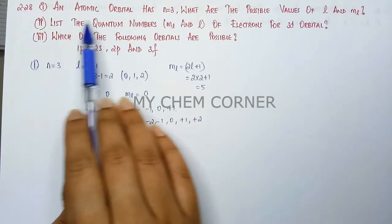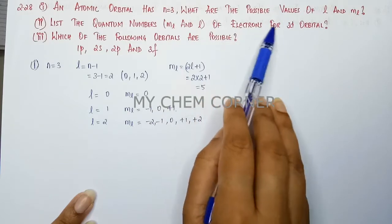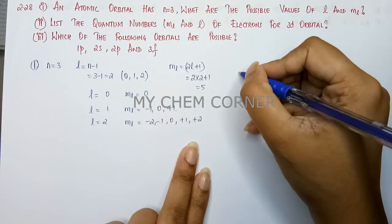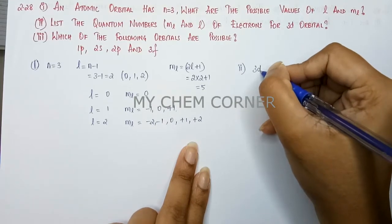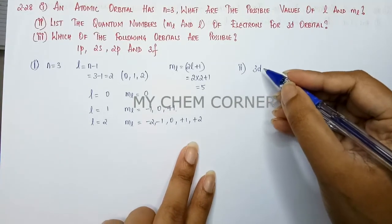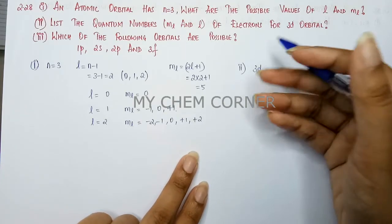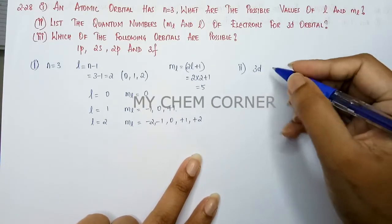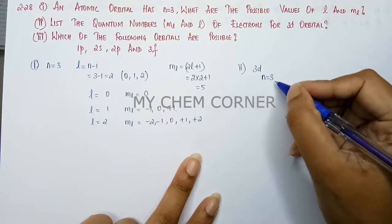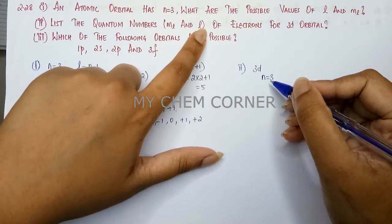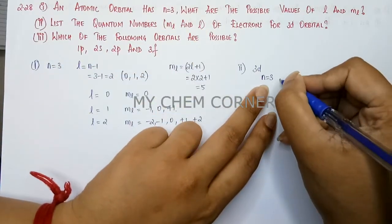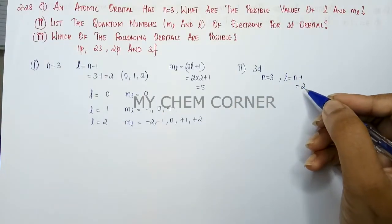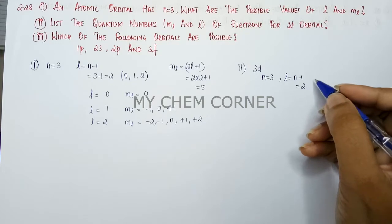The second question is: list the quantum numbers ml and l of an electron for the 3d orbital. For this, the orbital is 3d. The number 3 is the principal quantum number, so n is equal to 3. From n equal to 3, l goes up to n minus 1, which is 3 minus 1 equals 2.